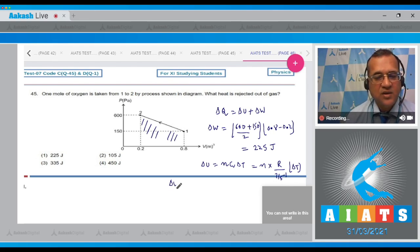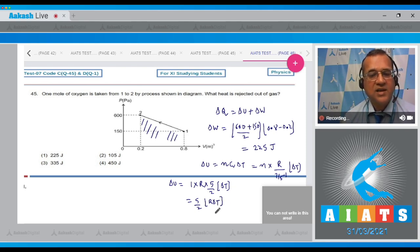So write ΔU equals n is 1 into R into 5/2 and ΔT. So this is equal to 5/2 R ΔT, right? And R ΔT is equal to...